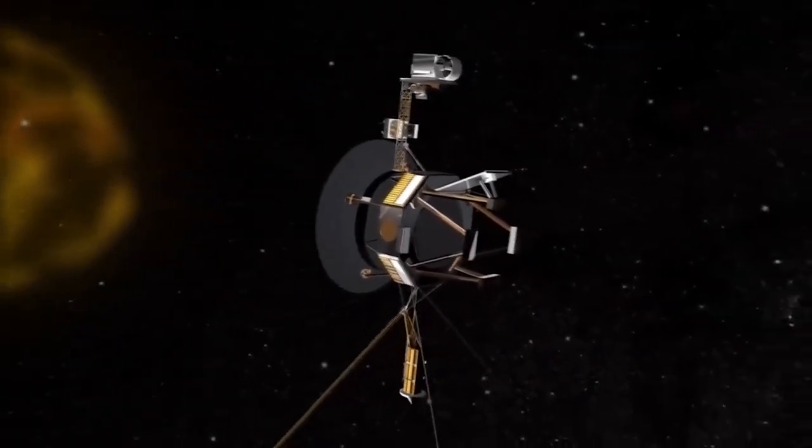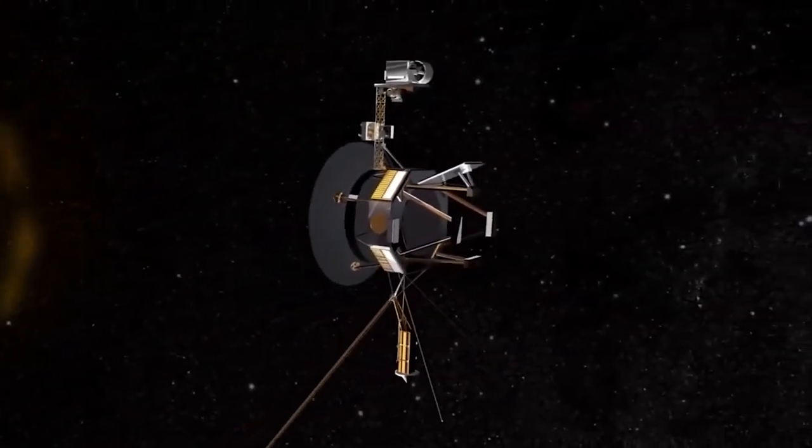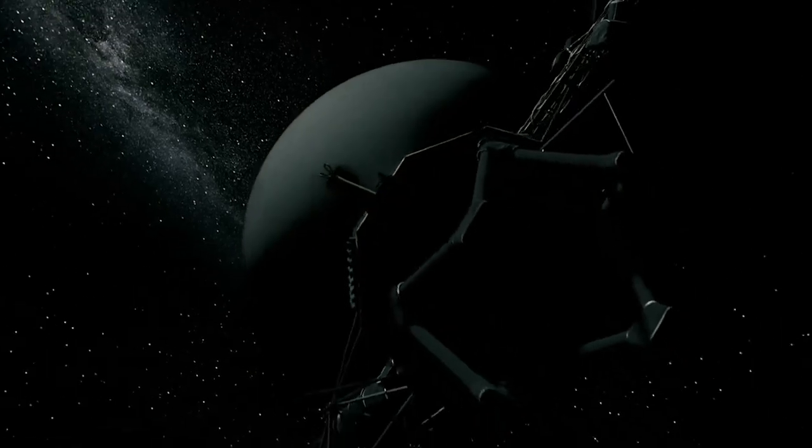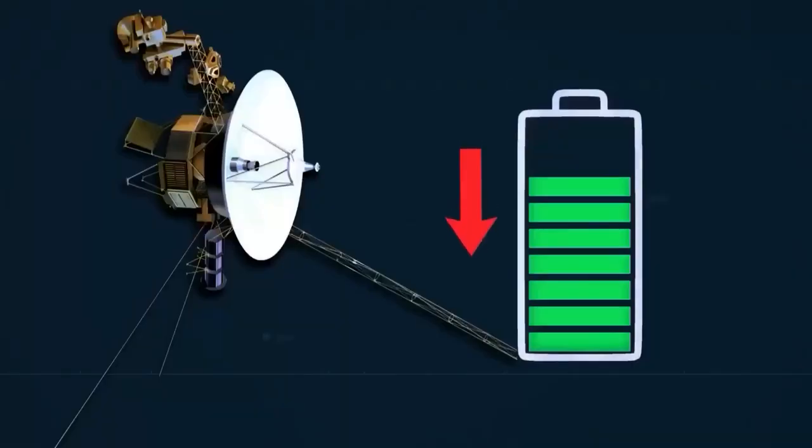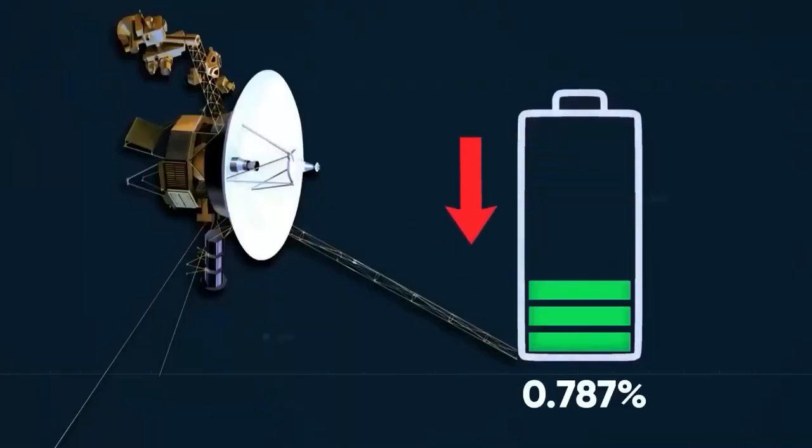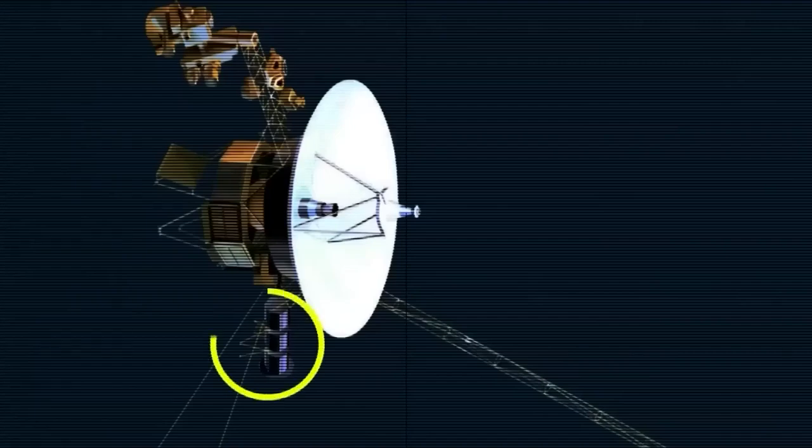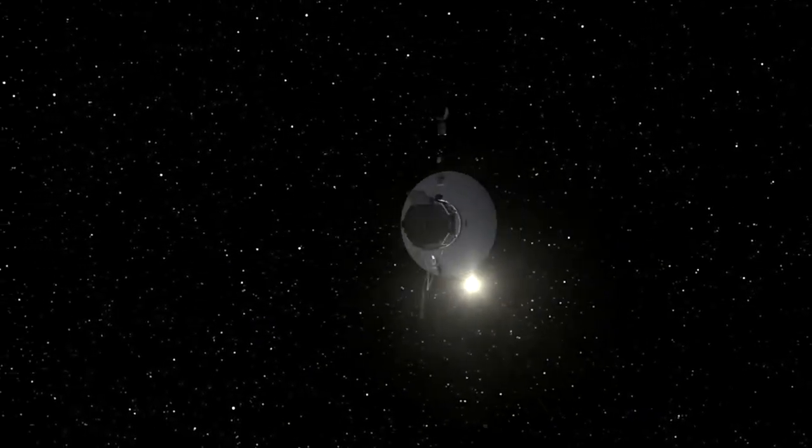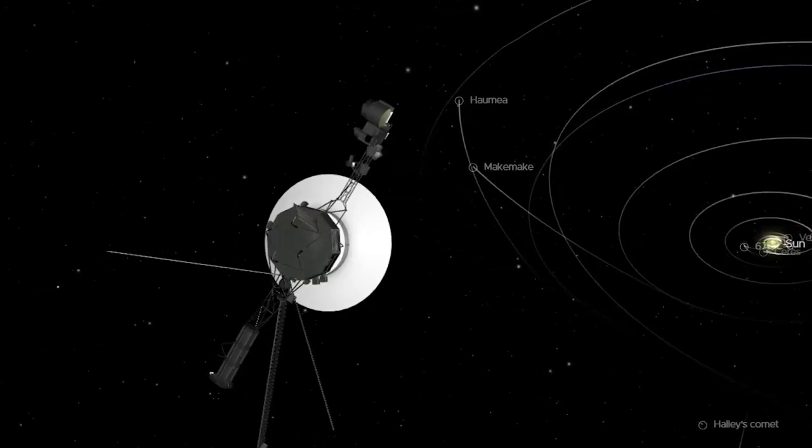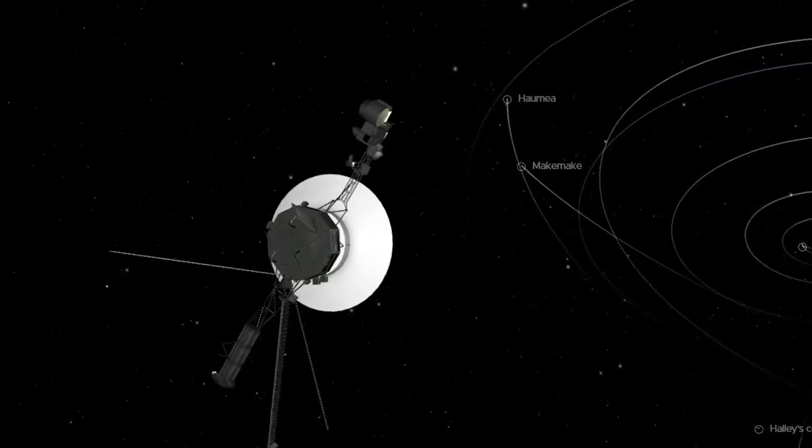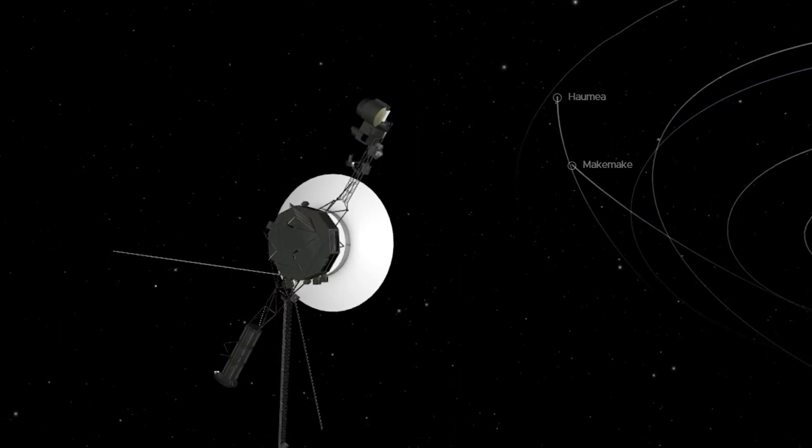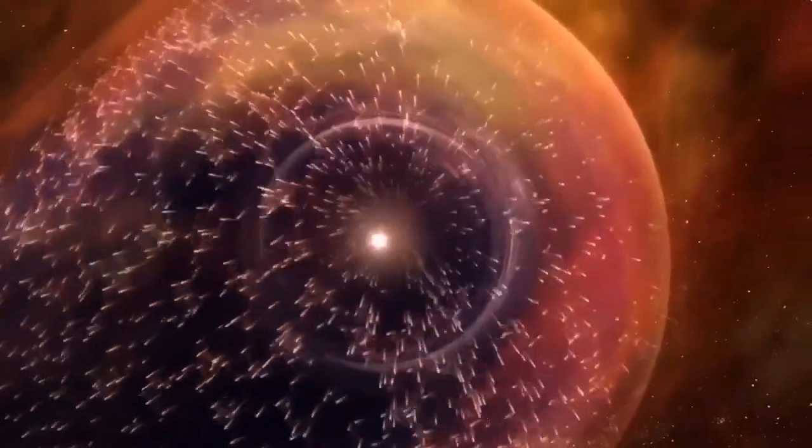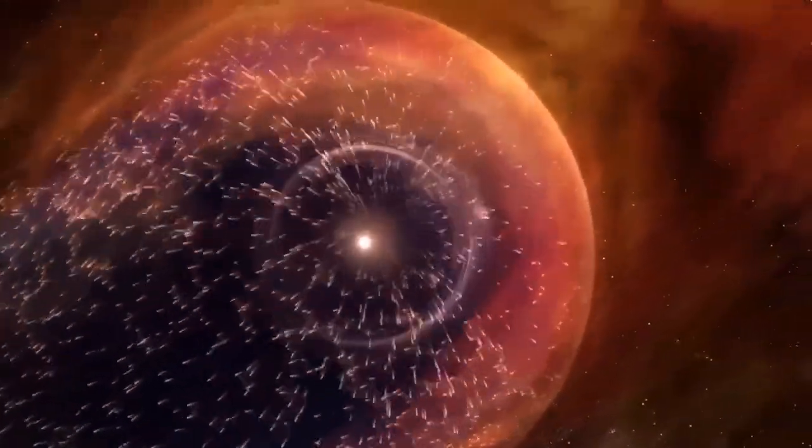As time passes, the nuclear batteries that supply power to Voyager 1 and Voyager 2 will gradually deteriorate, resulting in the spacecraft gradually losing power. Although several systems on the spaceship have been deactivated, the science instruments themselves have remained functional. Now that they have access to real field data from the Voyagers, theoretical models of the interaction between the heliosphere and the interstellar environment have become increasingly intricate.